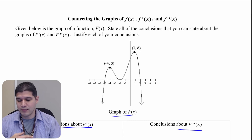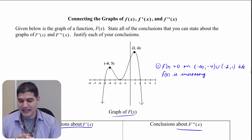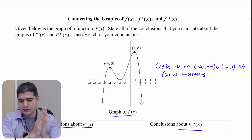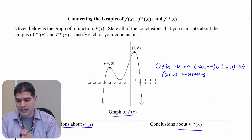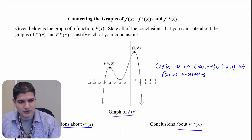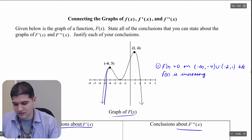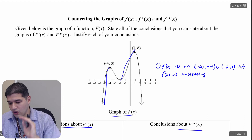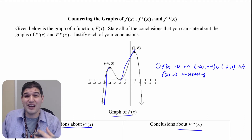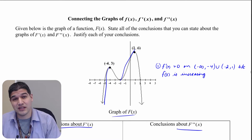The first thing we can tell is that f prime of x is greater than zero on the intervals from negative infinity to negative 4 and negative 2 to 1. The reason we know that is because on these intervals f is increasing, so f prime is going to be greater than zero.